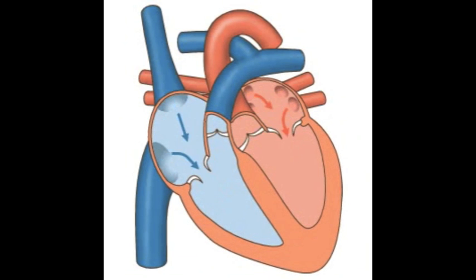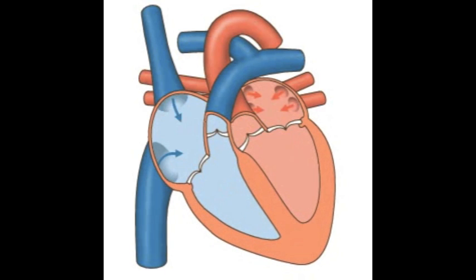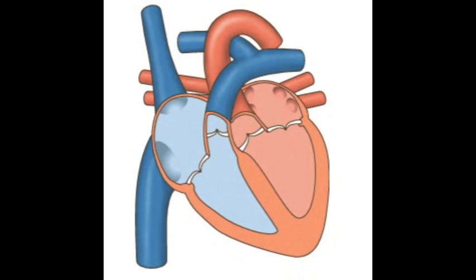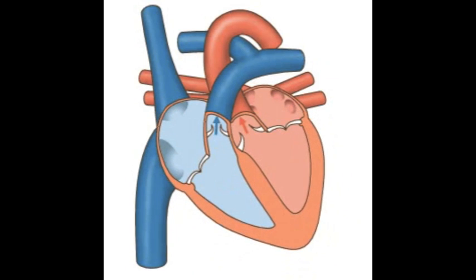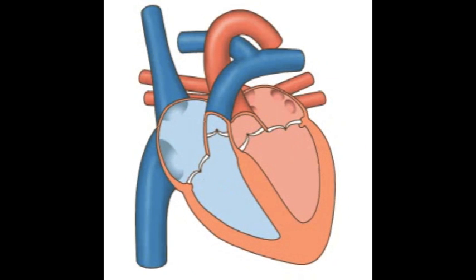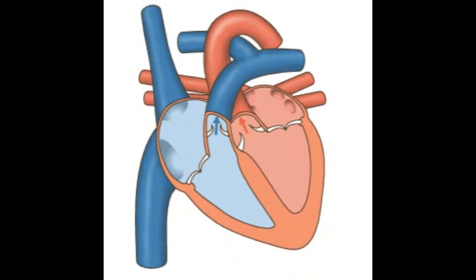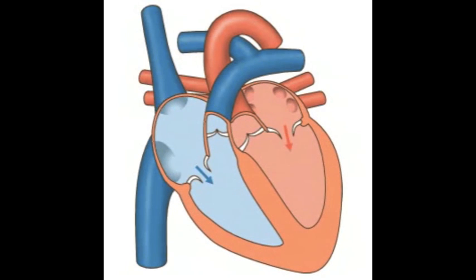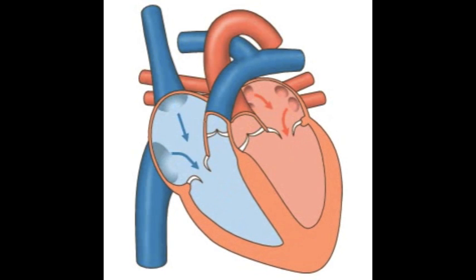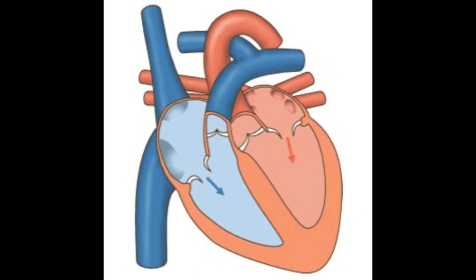The heart is a muscular pump located in the mediastinum of the thoracic cavity. The right side of the heart, shown here in blue, pumps deoxygenated blood towards the pulmonary circuit. The left side of the heart, shown here in red, pumps oxygenated blood towards the systemic circuit.